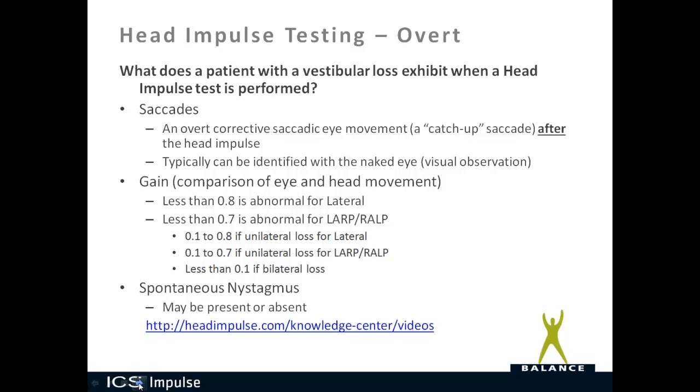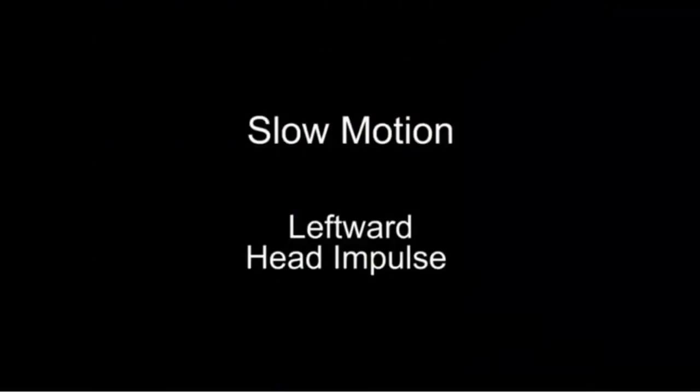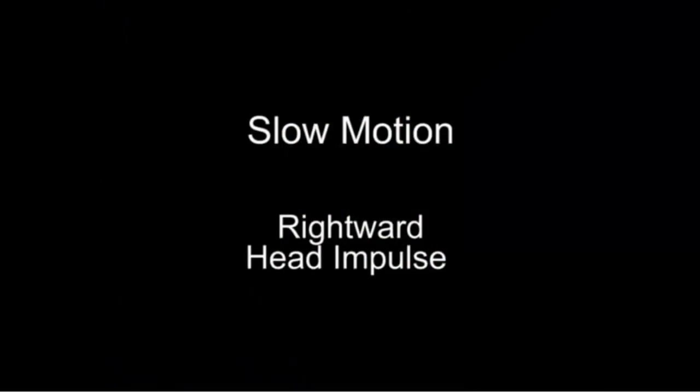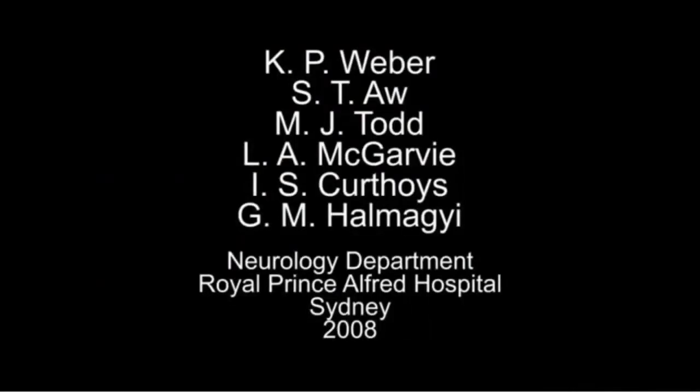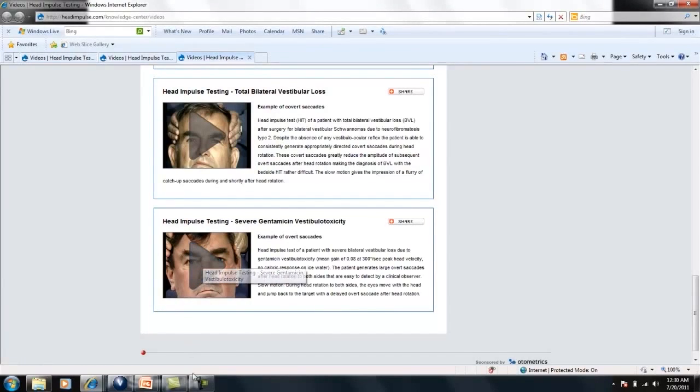To understand overt catch-up saccades, we're looking at a video on headimpulse.com. There's a rightward head movement and you can see the catch-up saccade — it's pretty obvious this person has catch-up saccades. In slow motion: the head turns, the eye looks back to the fixation dot. Even at regular recording speed, an overt catch-up saccade is very easy to see with the naked eye.